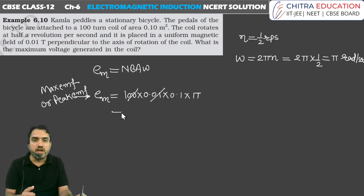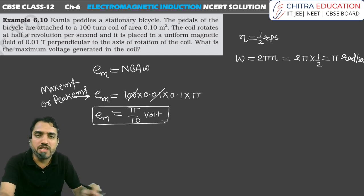So here we have two things cancel, and we have π by 10 volt EMF, which is the maximum EMF. Sometimes we ask for RMS EMF, so we have to divide by root 2.